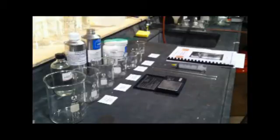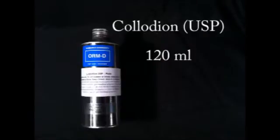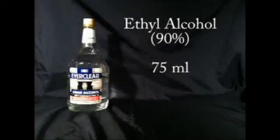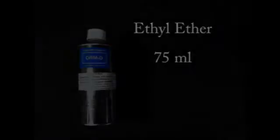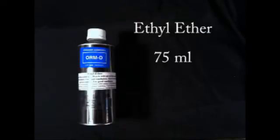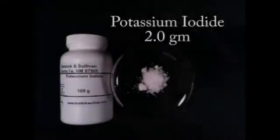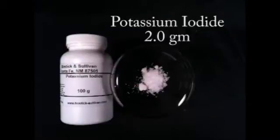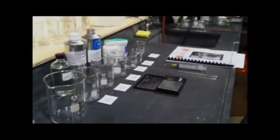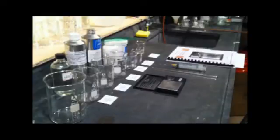The recipe that we'll be using is plain USP collodion 120 milliliters, ethyl alcohol 75 milliliters, ethyl ether 75 milliliters, cadmium bromide 1.5 grams dissolved in 2 milliliters of water, and potassium iodide 2 grams dissolved in 2 milliliters of water. We're only using enough water just to dissolve the powders. Too much water in the collodion will cause problems later on.